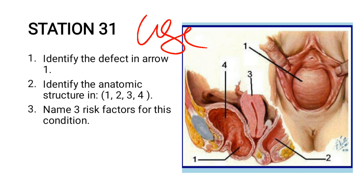So, identify the defect in R1. This R1 is showing us something which we need to identify. Question 2 is saying identify the anatomical structure in 1, 2, 3, and 4.